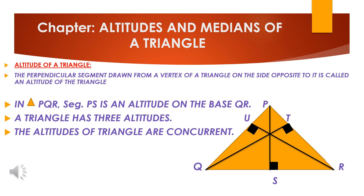First we will define altitudes of a triangle. The perpendicular segment drawn from a vertex of a triangle on the side opposite to it is called an altitude of a triangle.